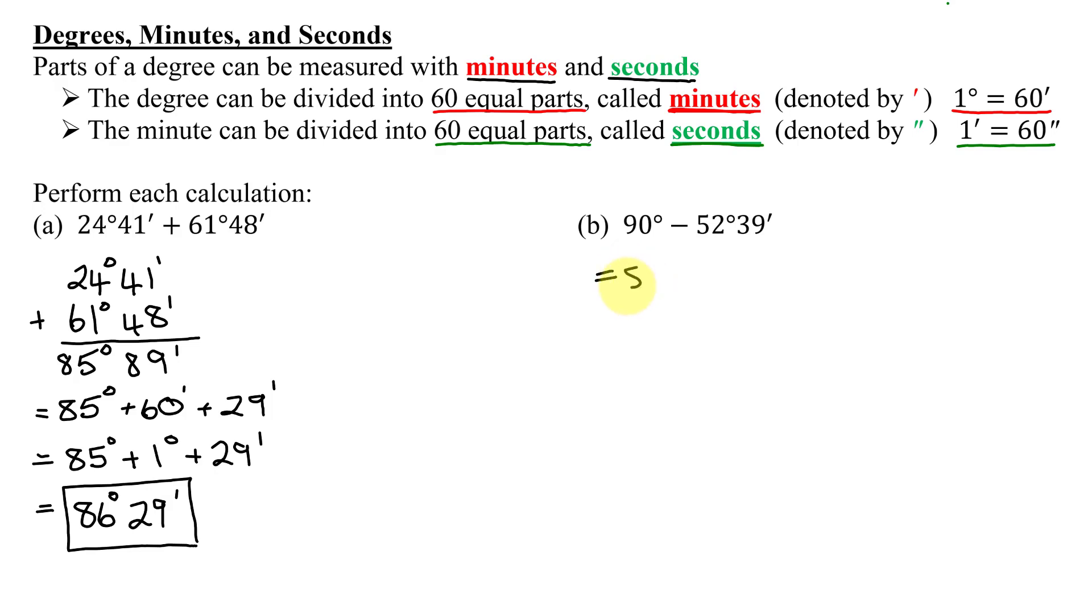90 minus 1 is 89 degrees. So I'm just going to write 90 degrees as 89 degrees plus 1 degree minus my 52 degrees 39 minutes. But now 1 degree is 60 minutes, so I can write this as 89 degrees 60 minutes.